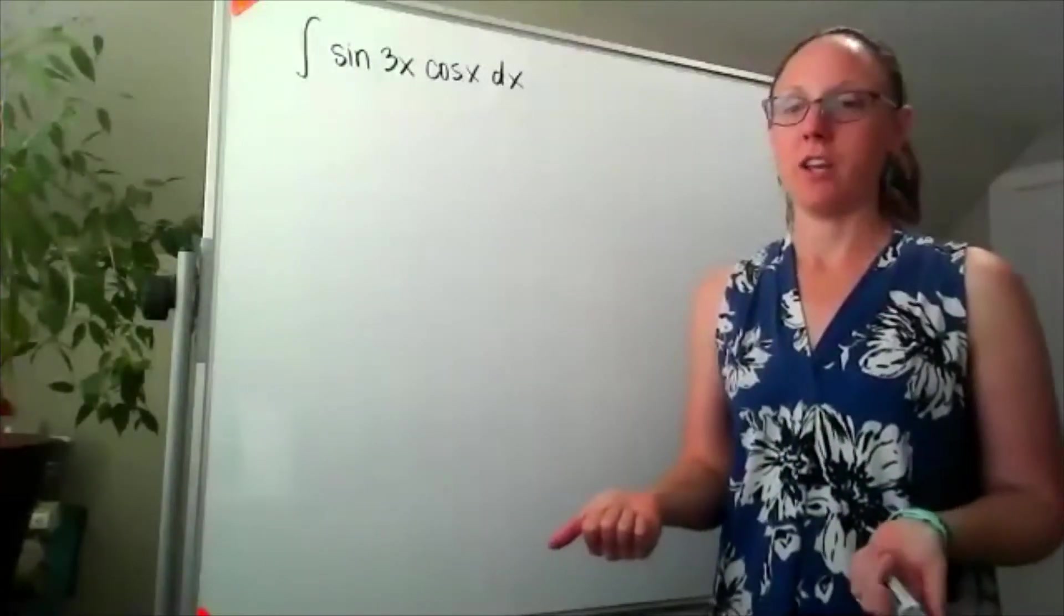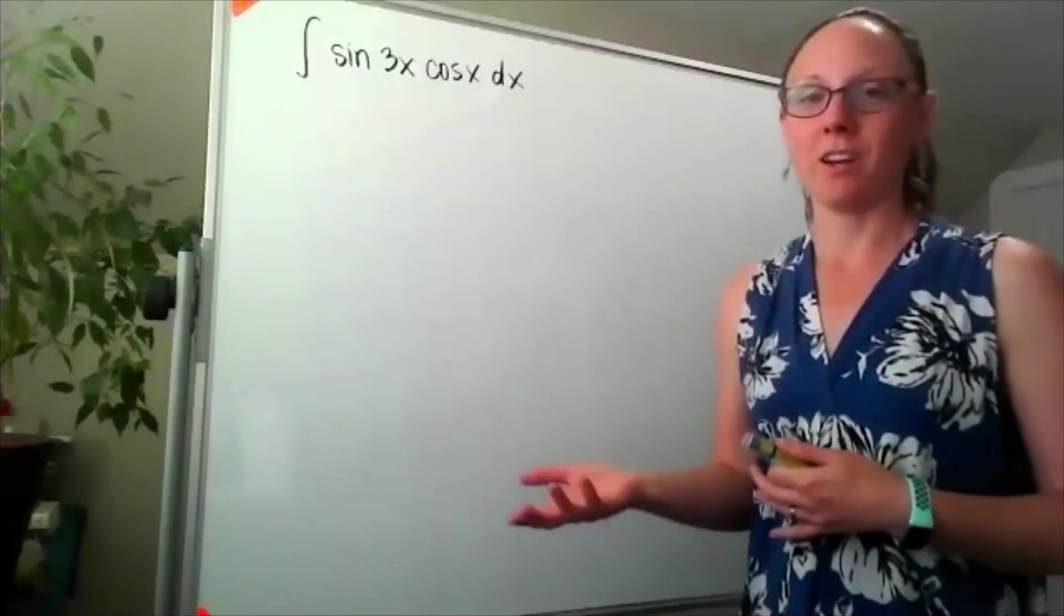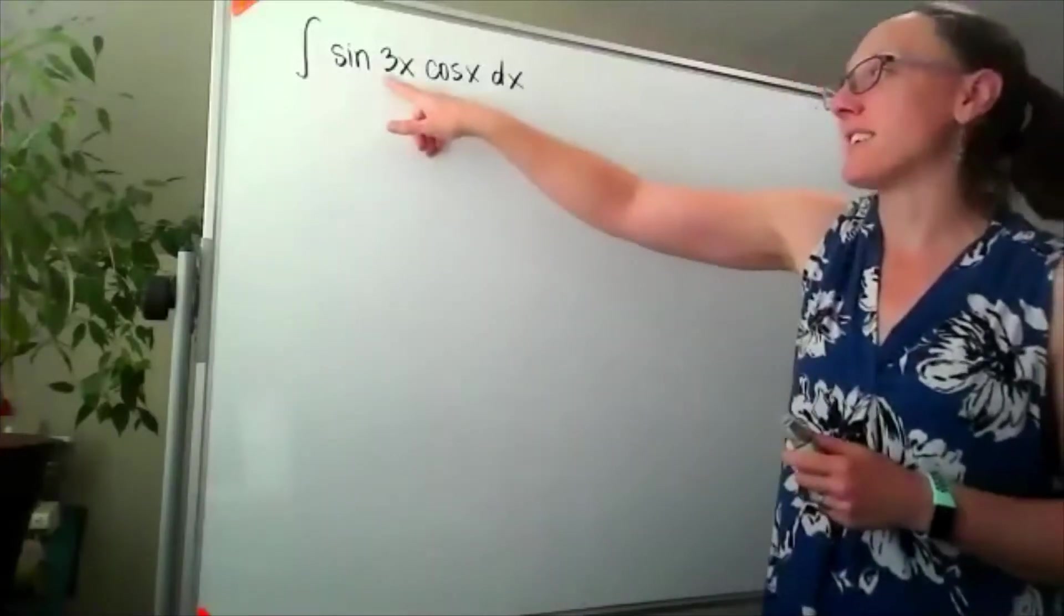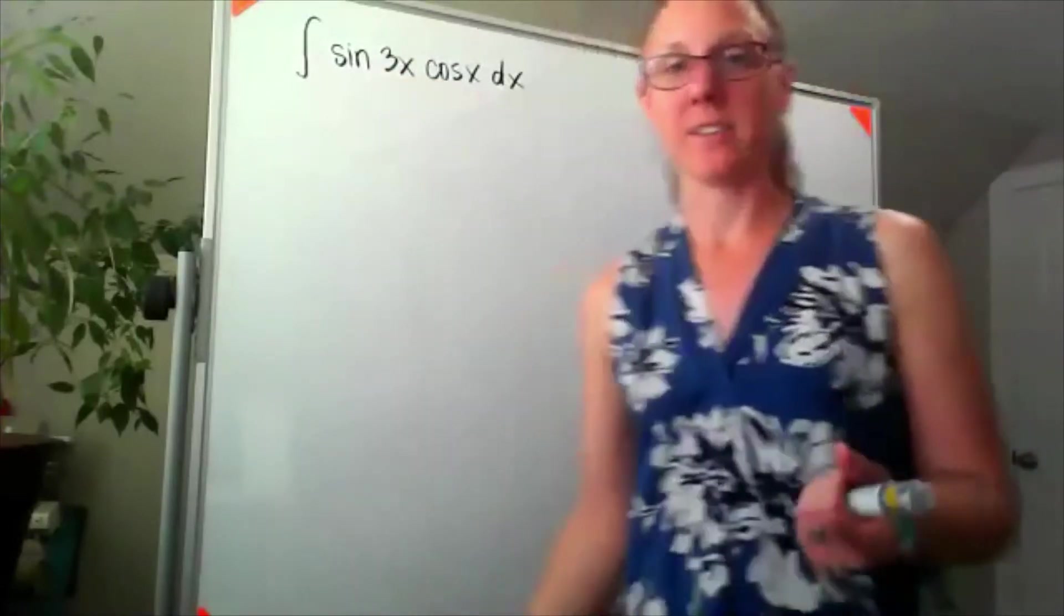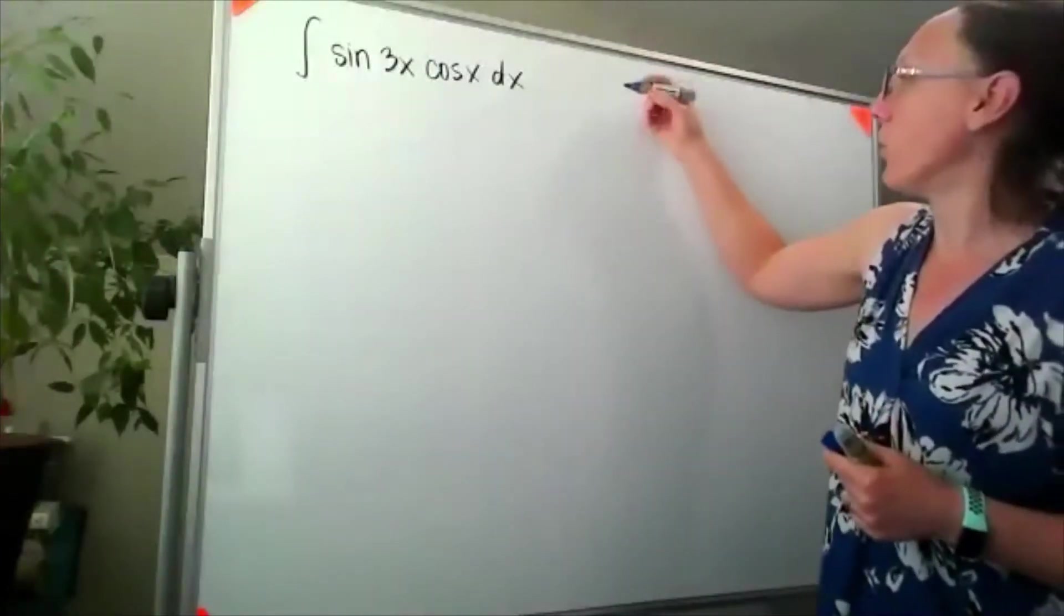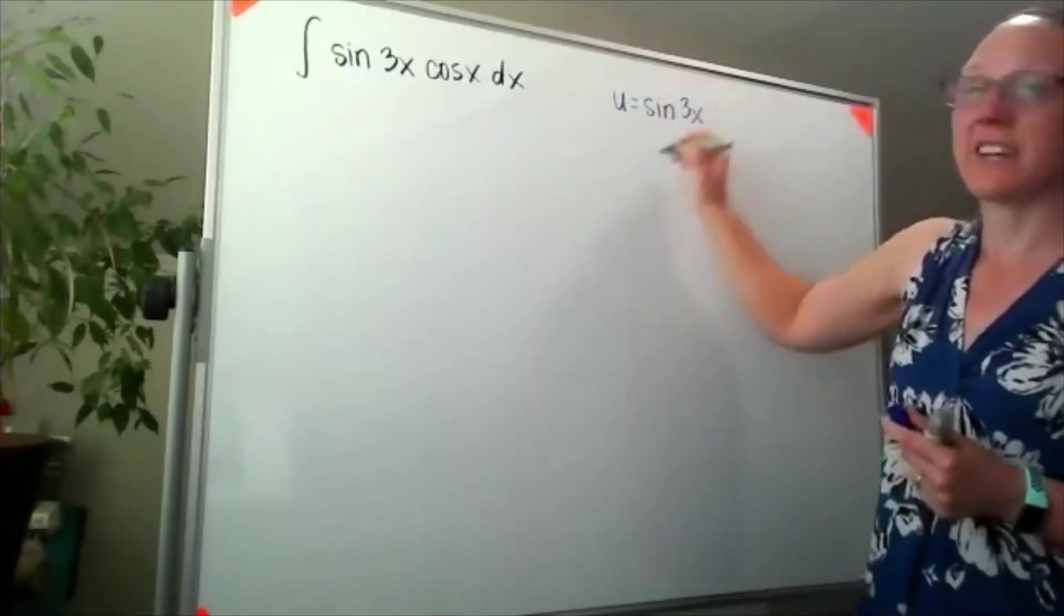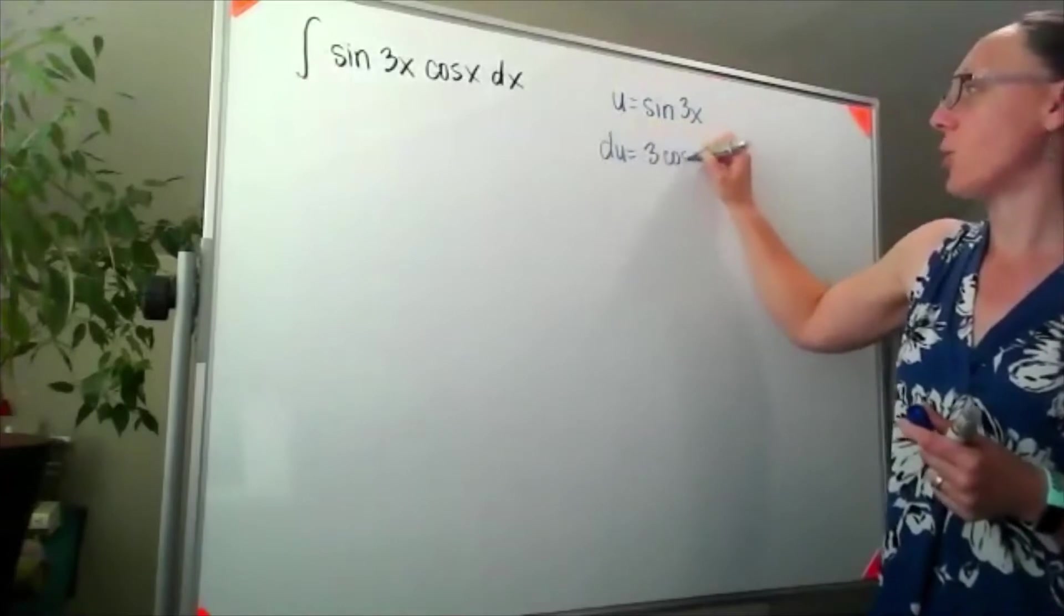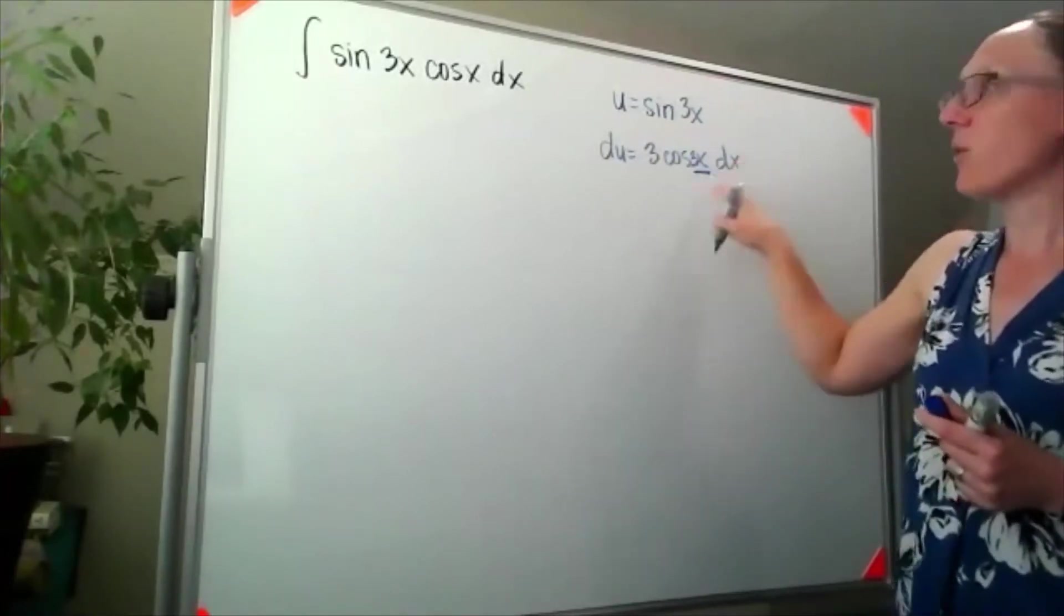At first it looks promising because I'm thinking the derivative of sine is cosine and the derivative of cosine is negative sine, but the problem is that those angles don't match - that cosine of x versus the sine of 3x. If I were to let u be equal to sine of 3x, for example, then du would be 3 cosine of 3x dx, and I don't have that 3x inside of the cosine.